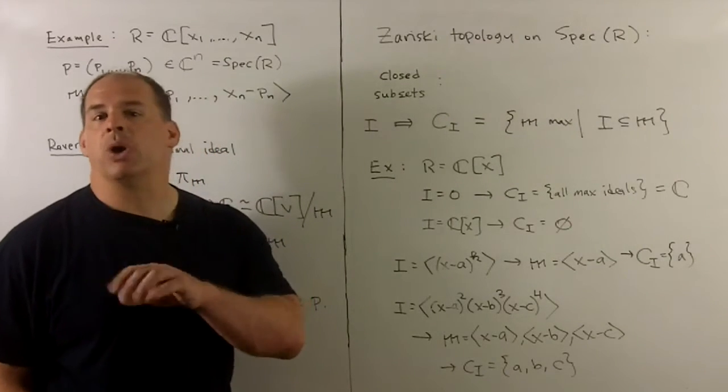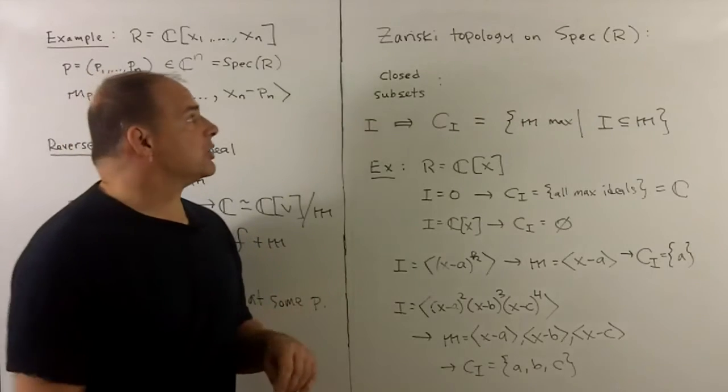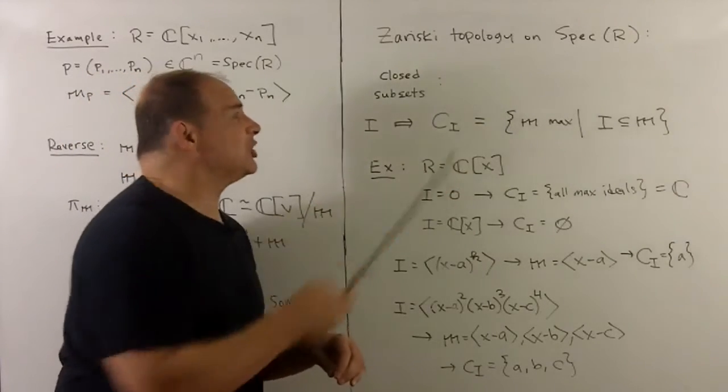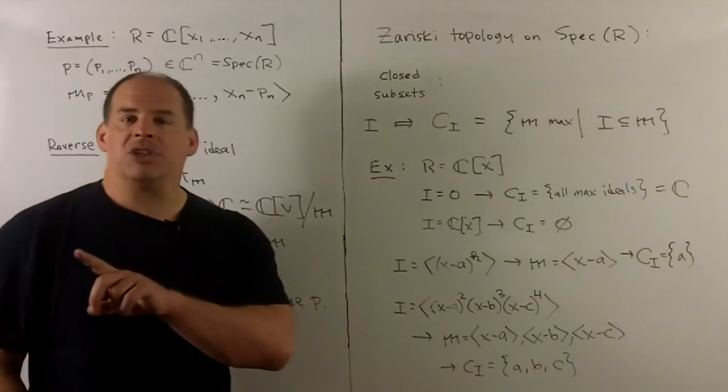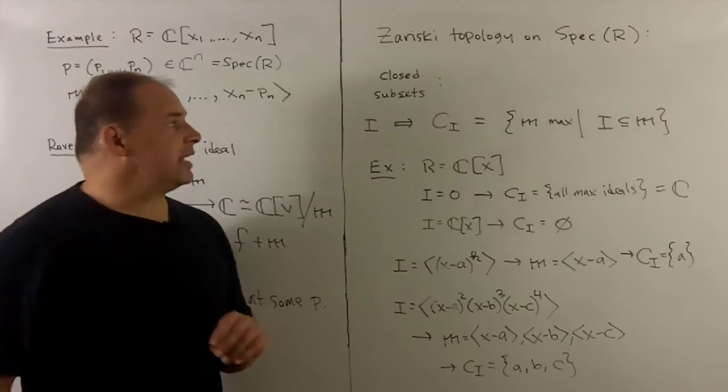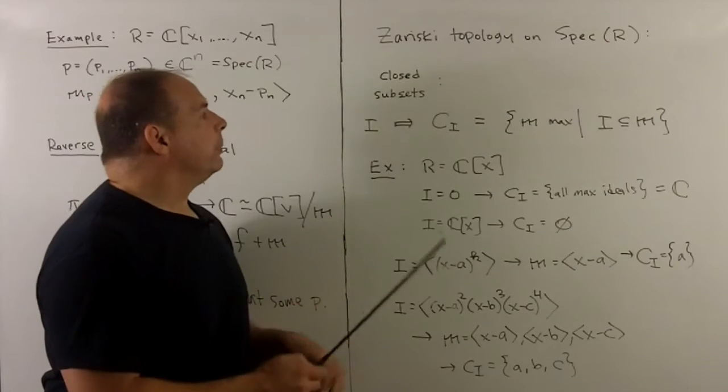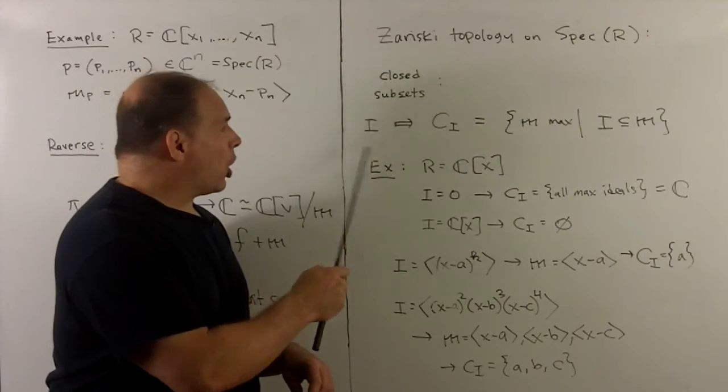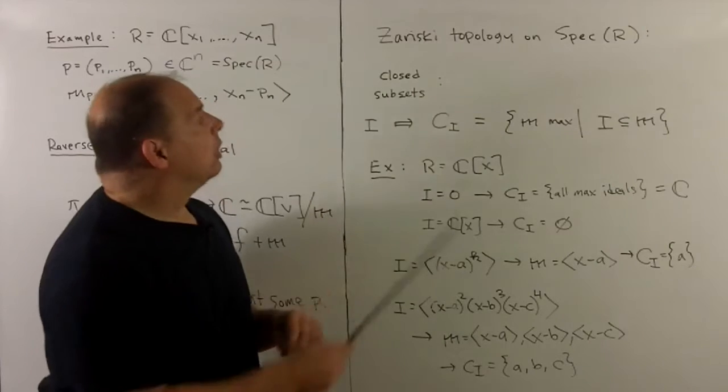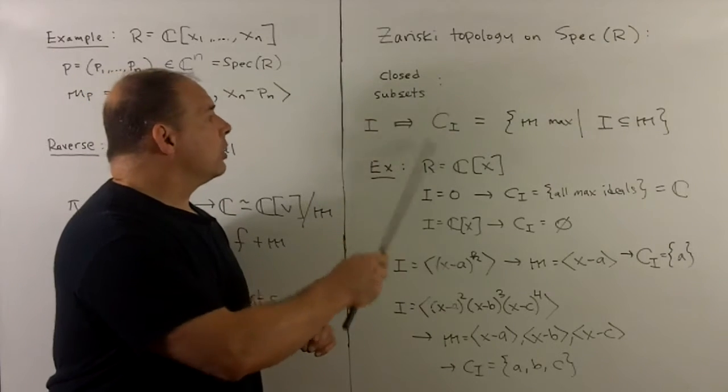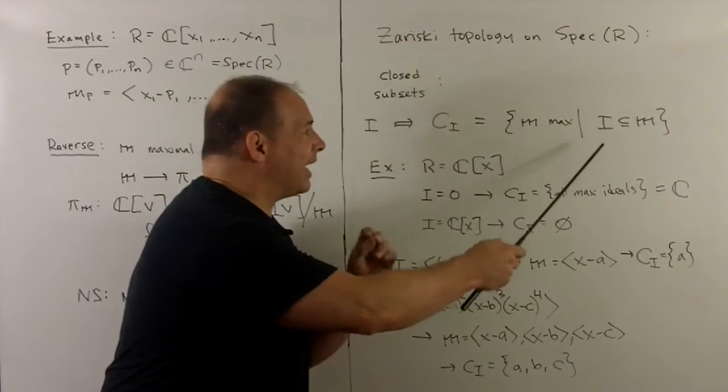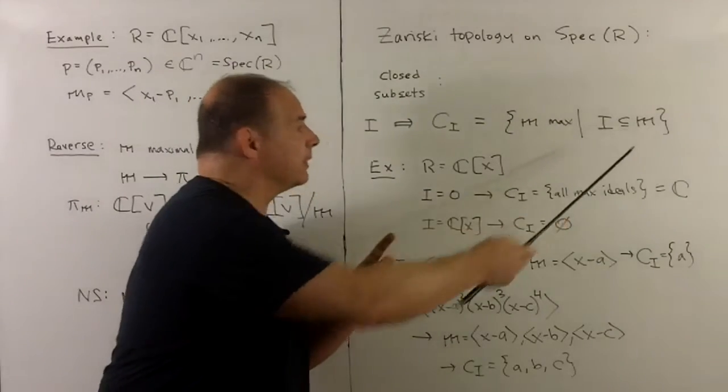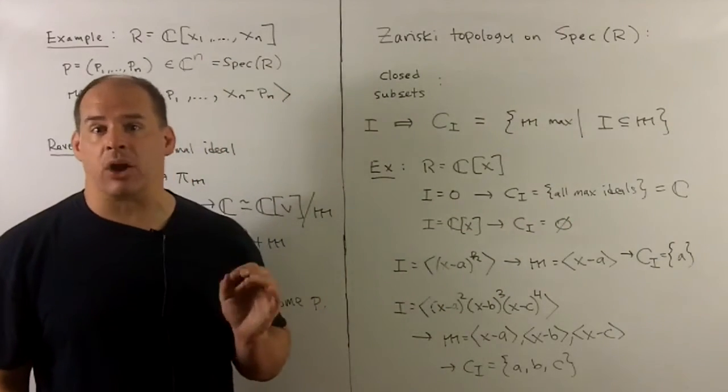Now it's not enough just to give the space's points. We also want to mention the topology. So we also call this the Zariski topology on Spec of R. We'll give the topology just by giving the closed subsets. So what we'll do, if we're given an ideal in R, we're going to map it to a closed set. And what we do is we're just going to take all the maximal ideals that I is contained in. So that's going to give us a subset of Spec R.